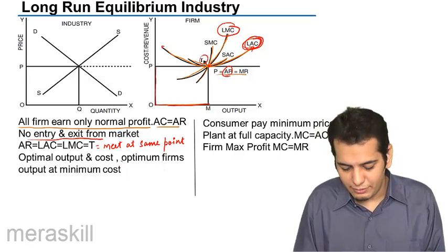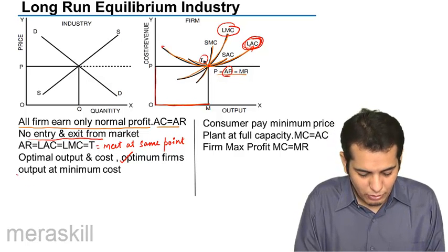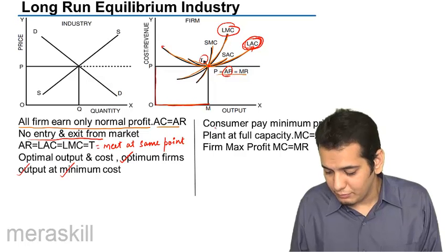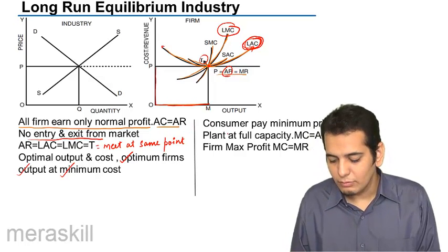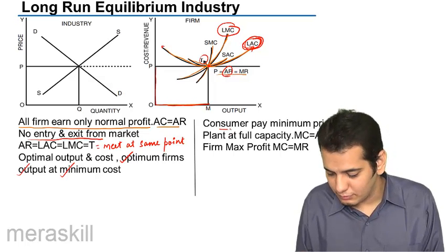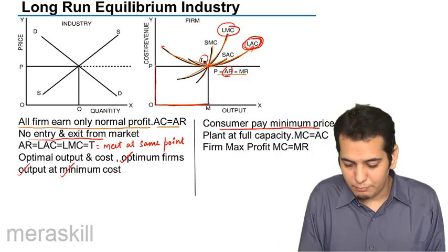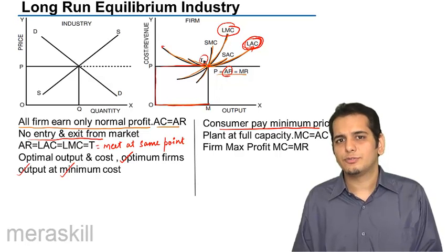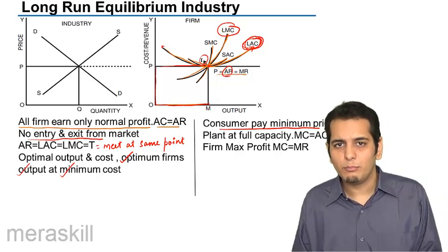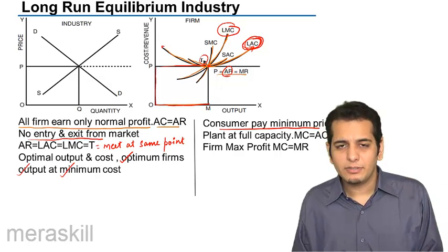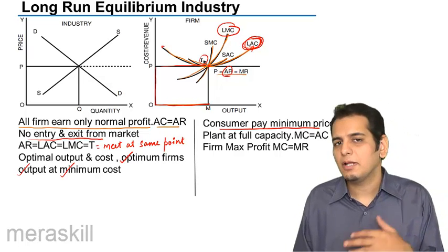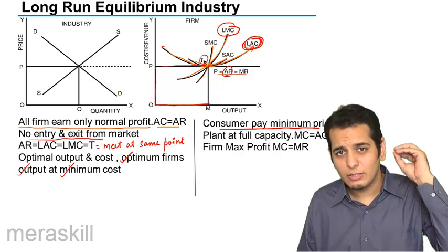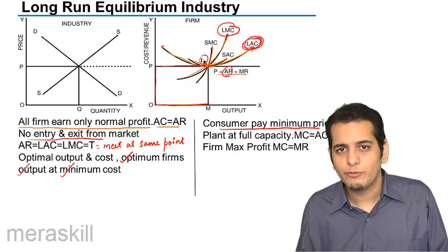In short, you can say that you have the optimum number of firms, optimum output at minimum cost, and consumers also pay a minimum price. They pay a minimum price because this is the price set by the market — consumers themselves and producers themselves have set this price through the forces of demand and supply. The equilibrium price is achieved where demand and supply meet, and this is the minimum price they would be required to pay to purchase the products.